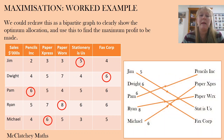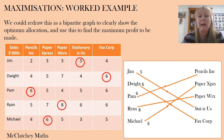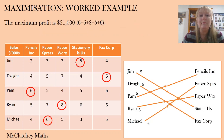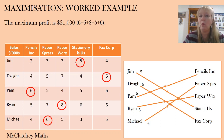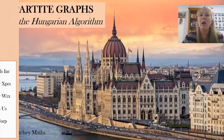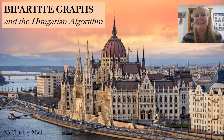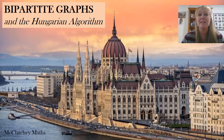I could also represent this information using a bipartite graph, and it's always a good idea to know how to take that matrix back to a bipartite graph in case you're asked to draw one. This shows the optimum allocation between salespeople and stores. We can also use the bipartite graph to calculate the maximum profit: the maximum profit from this combination is $31,000, found by adding together all of the different people's results. I hope this has been helpful — best of luck with your external exams. Please don't hesitate to contact me with questions, like and subscribe, and have a lovely day.